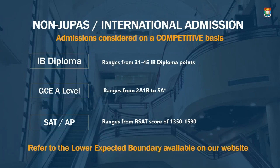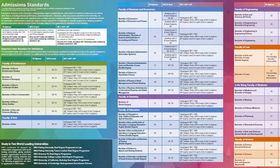One of the things we always get asked is how we evaluate students, especially when students come from a variety of qualifications. What you'll find posted on our website is information on what we call expected lower boundaries, usually in the form of three of the most popular international qualifications for you to benchmark yourself. Our programs admit non-JUPAS international students at a competitive range, and these ranges depend on what you're studying.